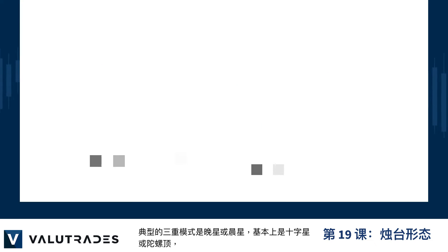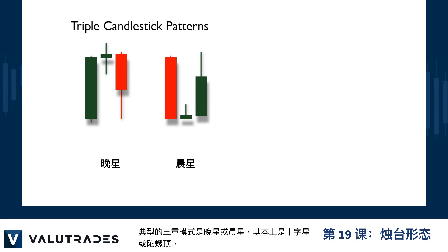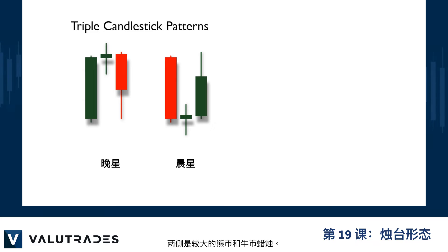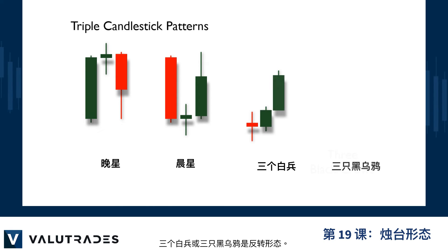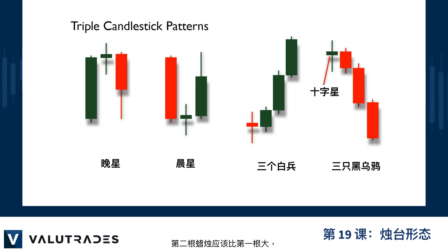A typical triple pattern is an evening star or morning star, which is basically a doji or spinning top flanked on both sides by larger bear and bull candles. The three white soldiers or three black crows are reversal patterns. They should occur right after a long trend or continuation, the second candle should be larger than the first, and the third should be at least as large as the second.